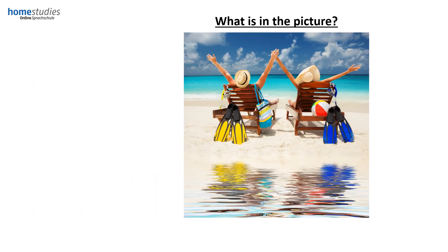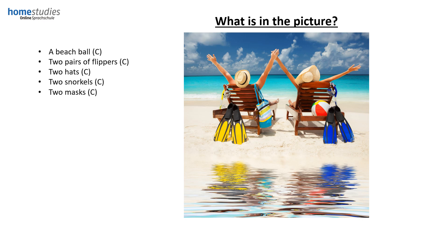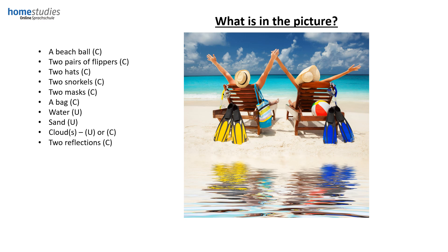Now let's have a look at the picture from earlier on and identify the nouns. A beach ball — countable. Two pairs of flippers — countable. Two hats — countable. Two snorkels — countable. Two masks — countable. A bag — countable. Water — remember it's a liquid, therefore it's an uncountable noun. Sand — sand is an uncountable noun because we cannot physically count every single grain of sand on the beach. Also clouds — you could say cloud or clouds, so uncountable or countable depending on the context. Two reflections — countable. Two sunbeds — countable. And finally, two people — countable.